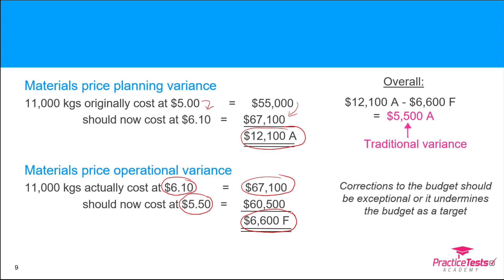So what started off looking like bad operational performance — a $5,500 adverse traditional variance — once split into planning and operational elements, we can actually see this is a planning issue. Operationally we performed very well: the world price went up to $6.10 and we managed to buy it for $5.50.